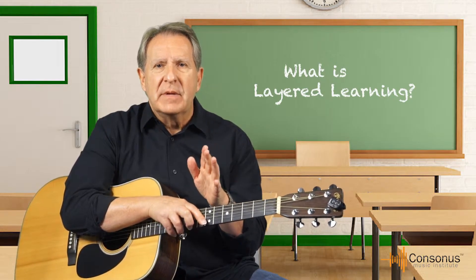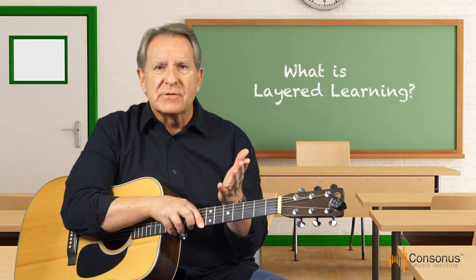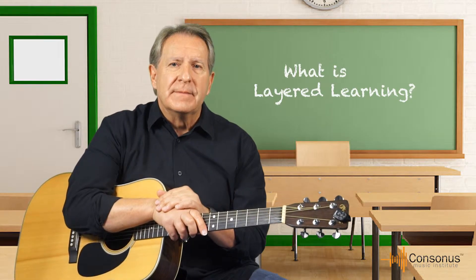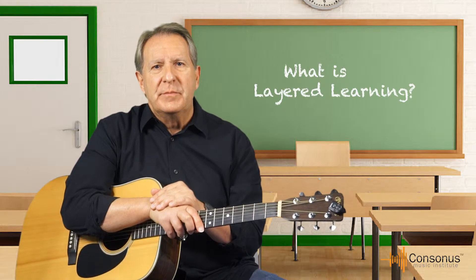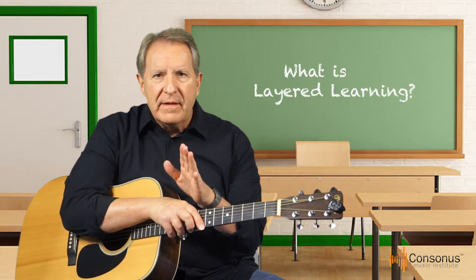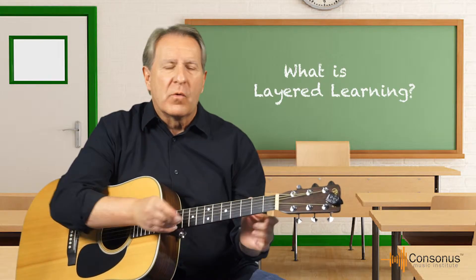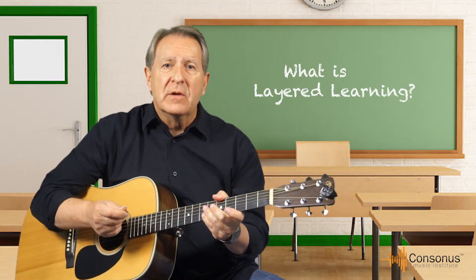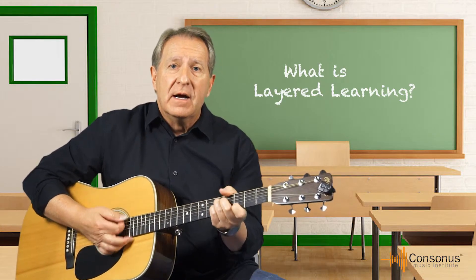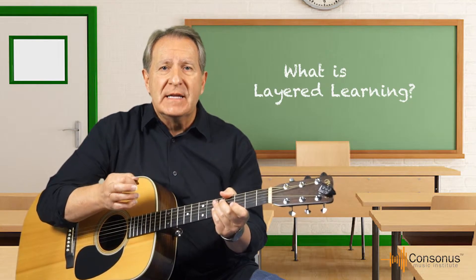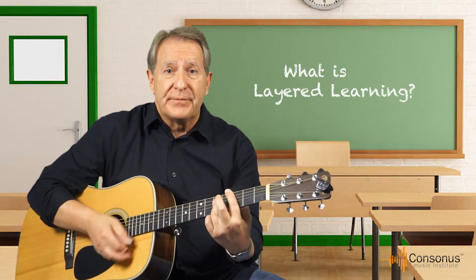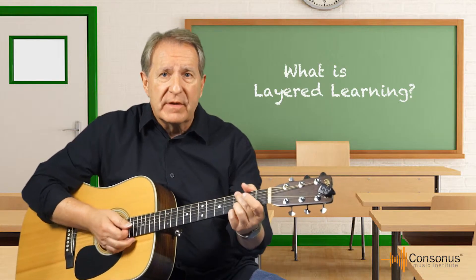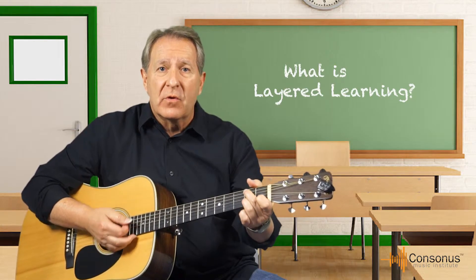All of the students in the class can be playing the same exercise and pieces using different levels of the same skills. For example, when the majority of the students are learning basic chords like G, C, and D7, the more experienced students could be learning the more advanced fingerings of the same chords — like G, C, and D7 using bar chords — or different voicings of those chords.